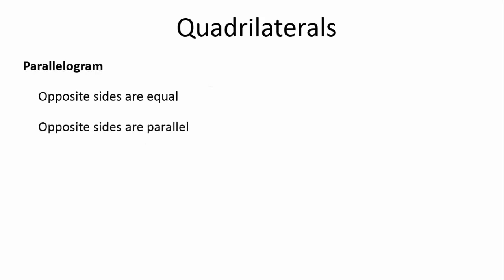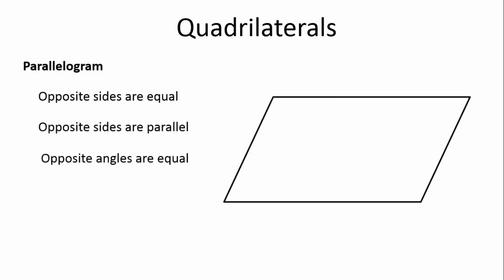Let's now look at a parallelogram. The opposite sides are equal, opposite sides are parallel, and opposite angles are equal. This is a pushed-over rectangle. That side is equal to that side, and that side is equal to that side. The opposite sides are parallel — those two are parallel, and those two are parallel. And opposite angles are equal: that angle is equal to that, and these two angles are equal to each other.